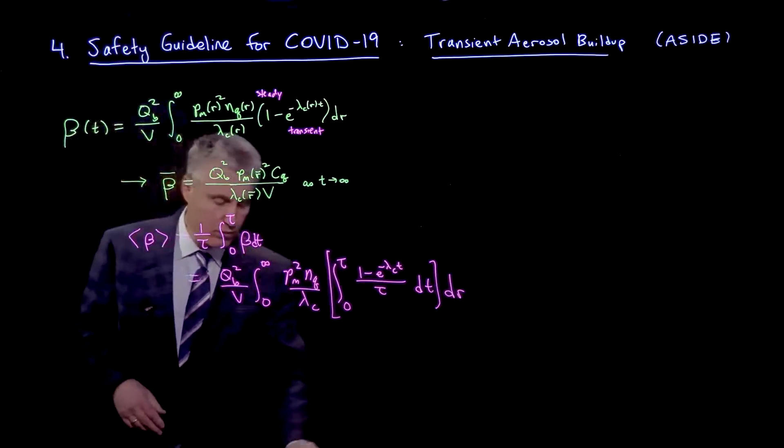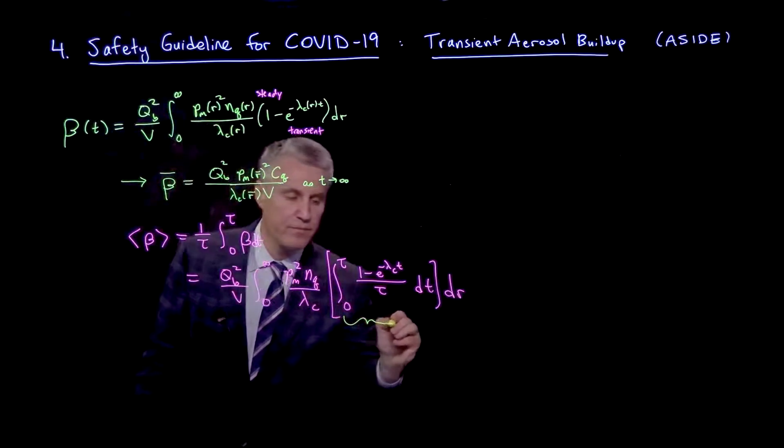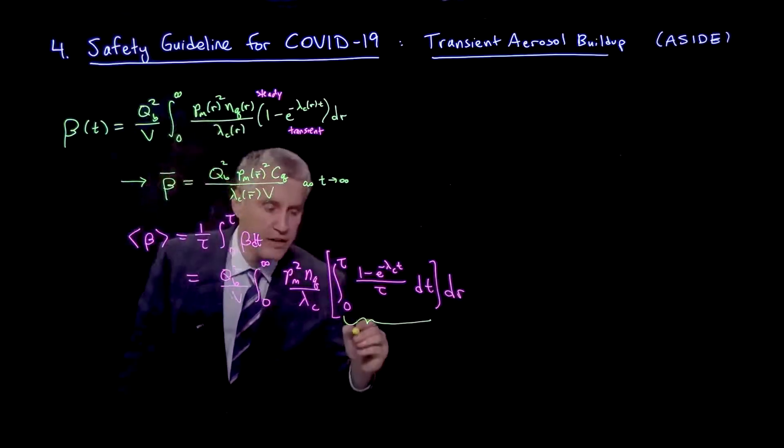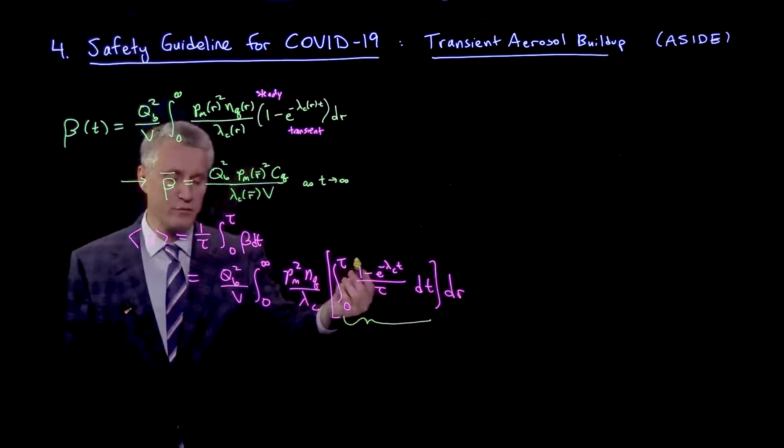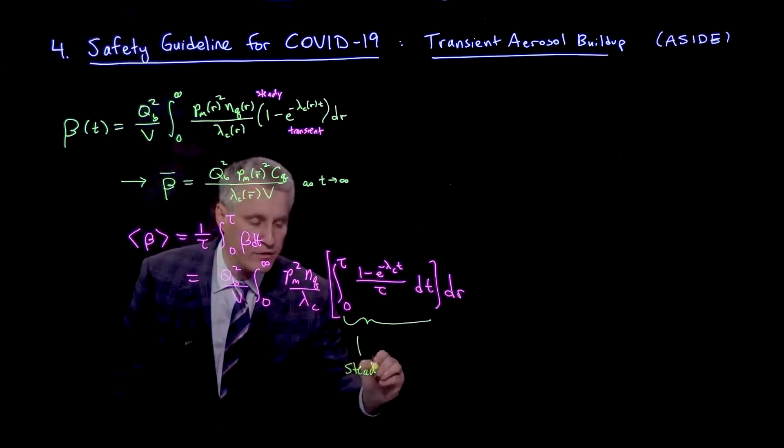And so what we have here, if we just look only at this expression right here, we can write this as a sum of a steady state term. So when it's just 1, this is the integral 1 over tau from 0 to tau, so that's just 1. So that's the steady state contribution.